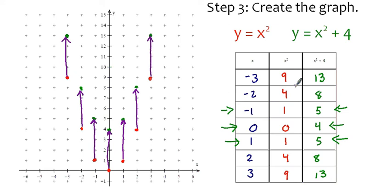And in our table, that's evident because 4 is 4 higher than 0, 5 is 4 higher than 1, 8 is 4 higher than 4, and 13 is 4 higher than 9. But just why is it that all these green dots are 4 units higher than the red dots?